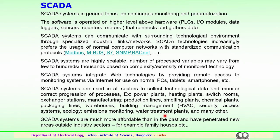SCADA technology could be used increasingly with normal computer networks, particularly with standard communication protocols available during installation. These technologies are adopted depending upon newer technologies which come into existence. SCADA systems are highly scalable — the number of processed variables could vary from a few hundred to thousands based on the complexity and extensity of the monitored technology. SCADA systems also integrate with web technologies by providing remote access to monitoring systems via the internet for use on normal PCs, tablets, smart phones, etc. Present-day usage of integrating with web technologies is being increasingly employed.